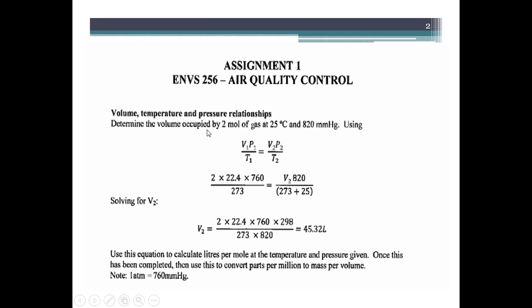So this is the first step where we determine the volume of the gas, the volume of 2 moles of gas occupied at temperature 25 degrees Celsius and at atmospheric pressure 820. Now this is the equation that we will be using. I will work through each of these parts individually for you. And from all the data provided, this is the data substituted into the equation. And what you are doing is you are solving for V2. So V2 is actually what is going to give you the volume of gas. You use this equation to calculate the liters per mole at that temperature and pressure that was given above.